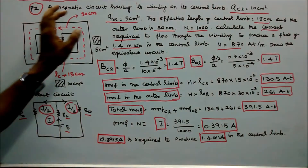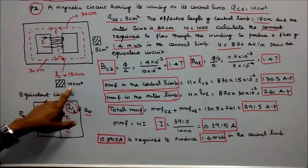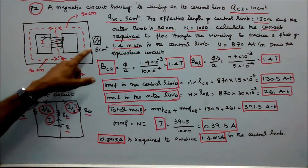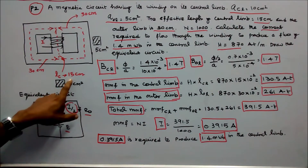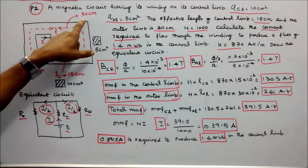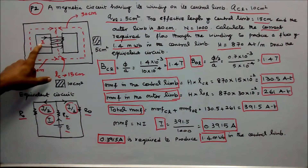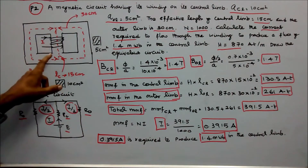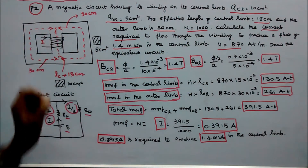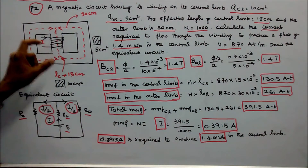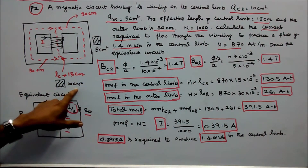Problem number 2: A magnetic circuit with its winding on the central limb. Cross-sectional area of the central limb is 10 cm². Cross-sectional area of the outer limb is 5 cm². The effective length of the central limb is 15 cm. The effective length of the outer limb is 30 cm. Number of turns is 1000. Calculate the current I to produce a flux of 1.4 mWb in the central limb. H = 870 ampere-turns per meter.